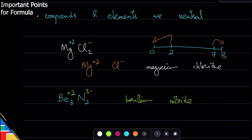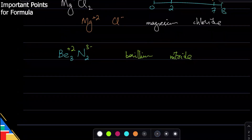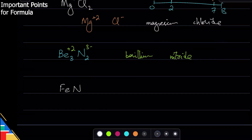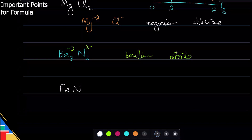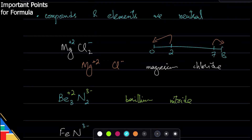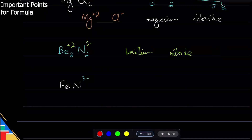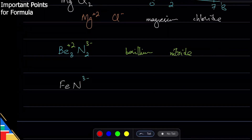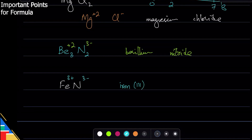Now let's take it one step forward. In this compound I don't know the charge on iron because it's a transition metal, but I do know the charge on nitrogen — group five, so it gains three electrons: minus three. Since the overall charge must be zero, to cancel minus three I need plus three, so iron is plus three. This is iron(III) nitride — remember it's a transition metal, so you must specify the Roman numeral.